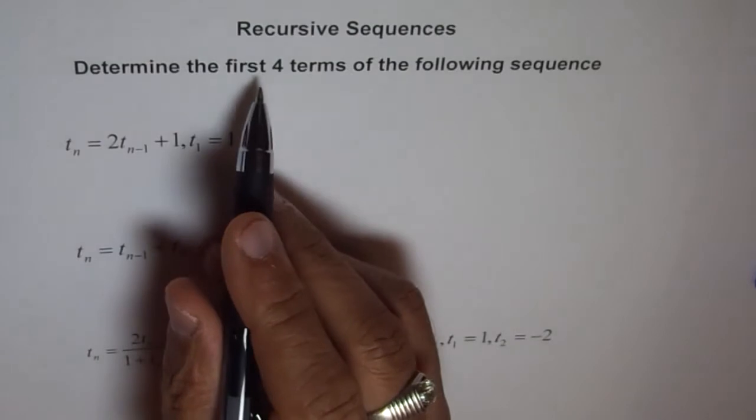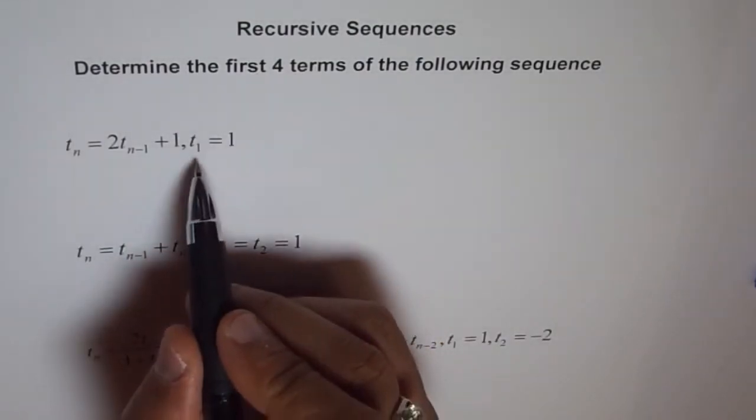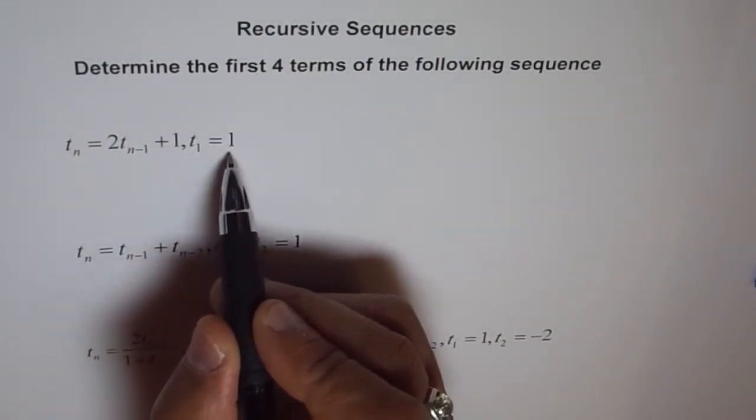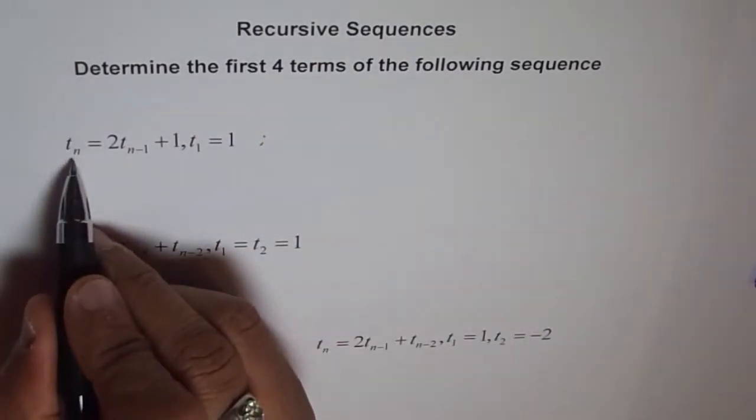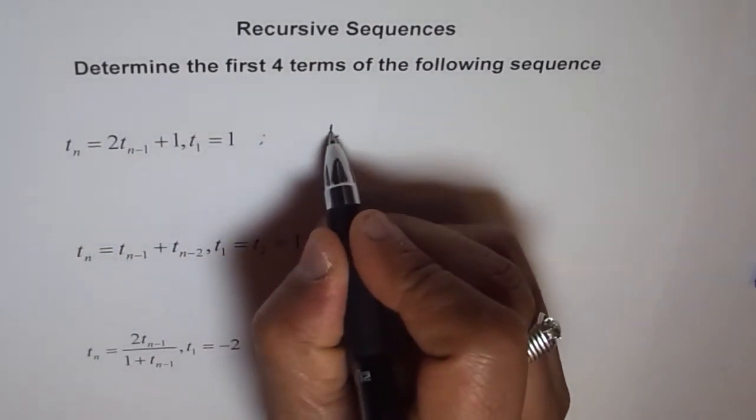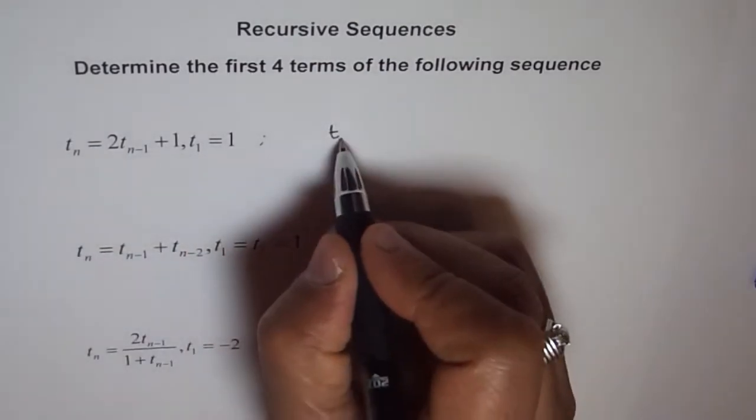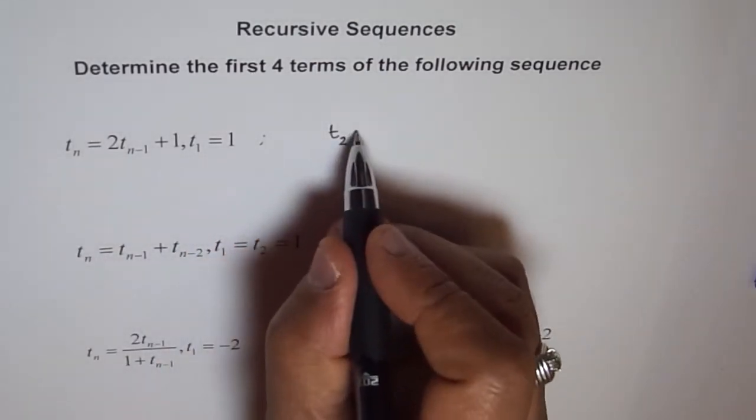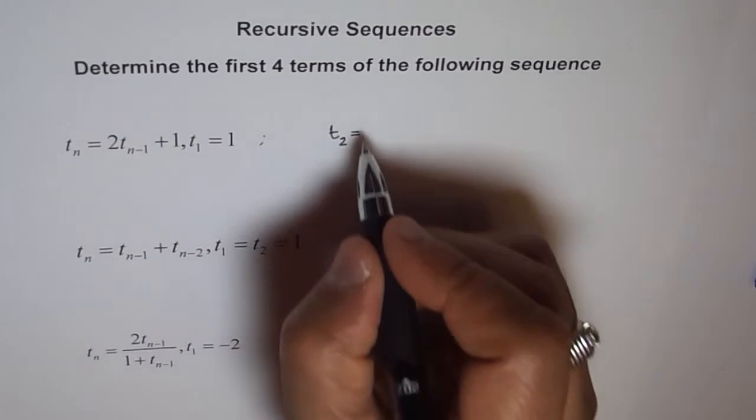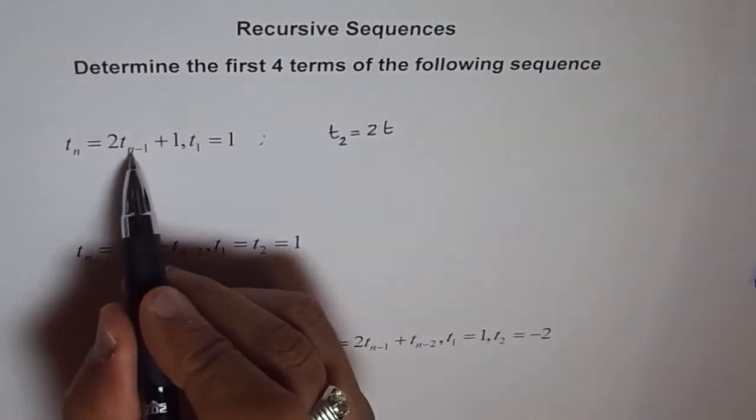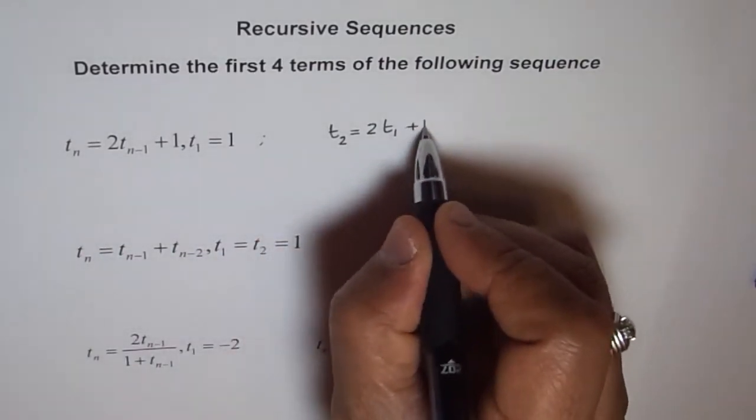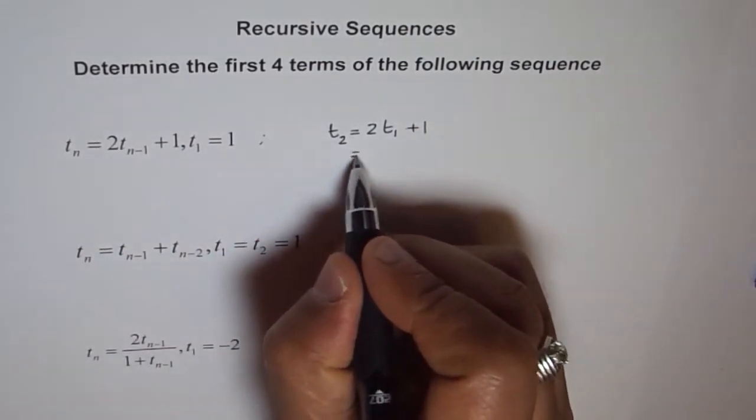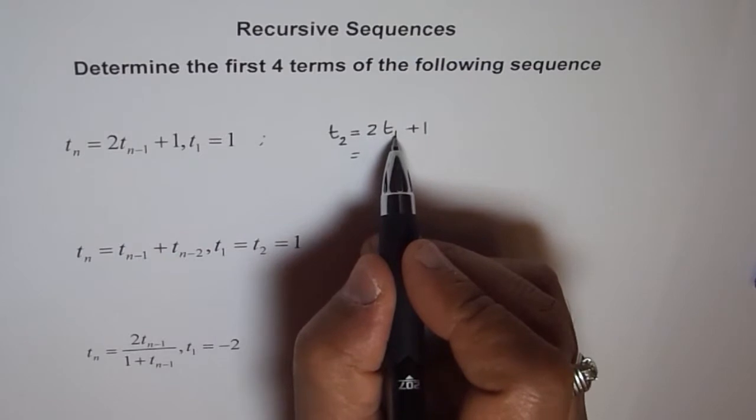So T1 is given to us. First four means we want to find T1, T2, T3 and T4. One is given to us and we will just start with T2. So this is the formula Tn. If I write instead of n, I am writing 2 now to find my second term. So T2 is 2 times T2-1, which is T1, plus 1.